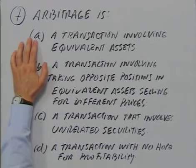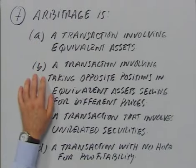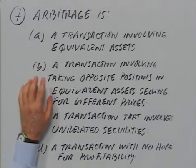A states that arbitrage is a transaction involving equivalent assets, which is true. But B is the most accurate definition: arbitrage involves taking opposite positions in equivalent assets that are selling at different prices. You take advantage of this arbitrage opportunity by trading in related assets that are trading at different prices. So B is the correct answer.